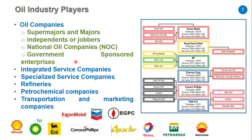Then we have government-sponsored enterprises — private companies where some stocks are sold to the public but the majority of stocks are owned by the government, like Petrobras in Brazil. We also have integrated service companies like Schlumberger, Baker, and Halliburton, which provide a wide spectrum of services to oil companies such as logging, perforations, and cementing. Then we have specialized service companies, refineries and petrochemical companies, and transportation and marketing companies responsible for delivering end products to the end consumer.